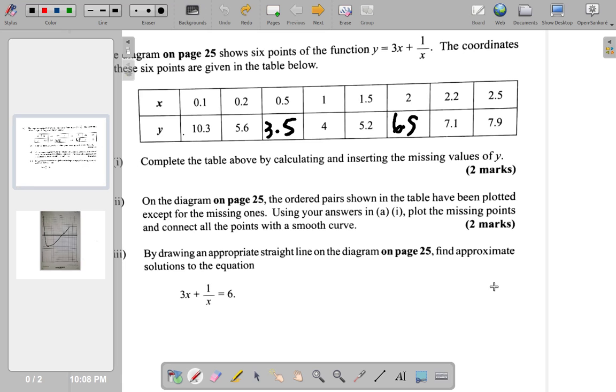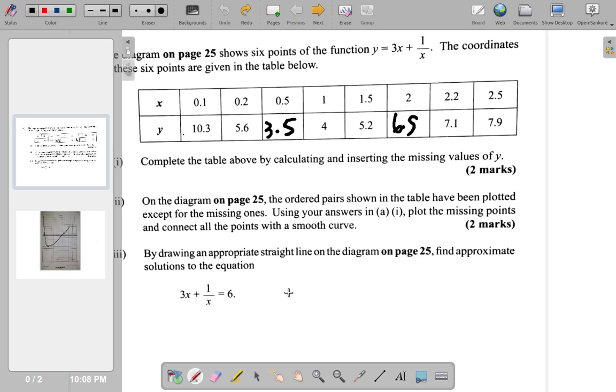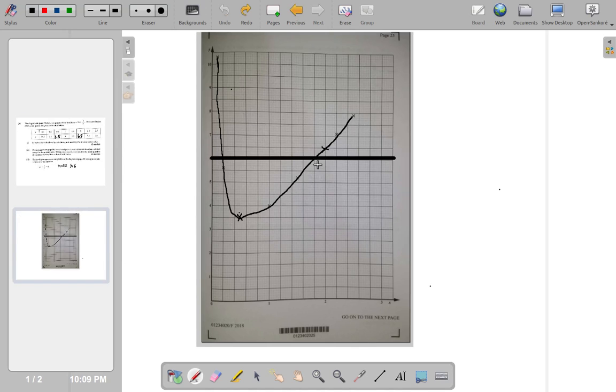Now, you're asked to find appropriate solutions to that equation using the graph. By drawing an appropriate straight line, that's what you're going to do. So, you're going to look at the graph and tell what the values are. It seems to me that you have x is 0.2, y is equal to 6. So, when x is 0.2, y is 6. And they intersect at another point.